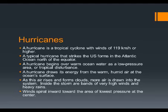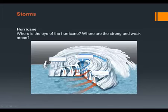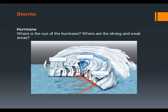As the air rises and forms clouds, more air is drawn into the system. Inside the storm are bands of very high winds and heavy rains. Winds spiral inward towards the center of lowest pressure. The eye of the hurricane is located right in the very center, and it is an area of extreme low pressure.